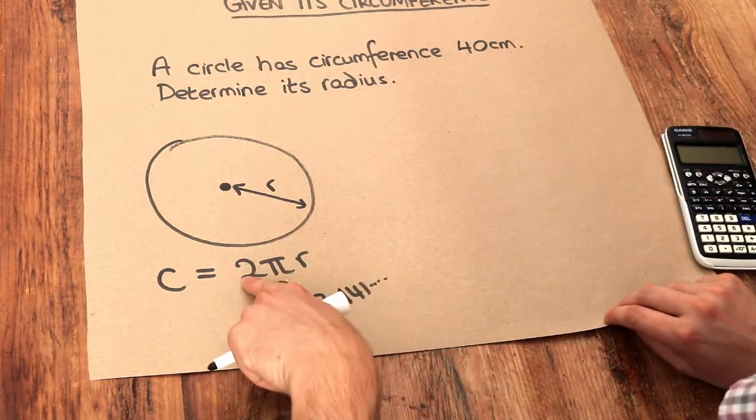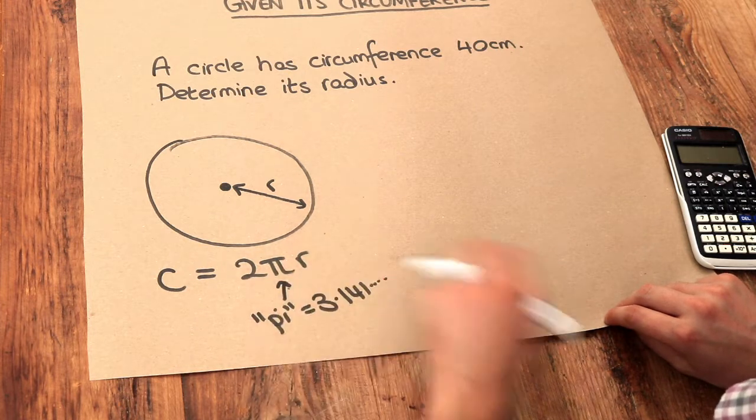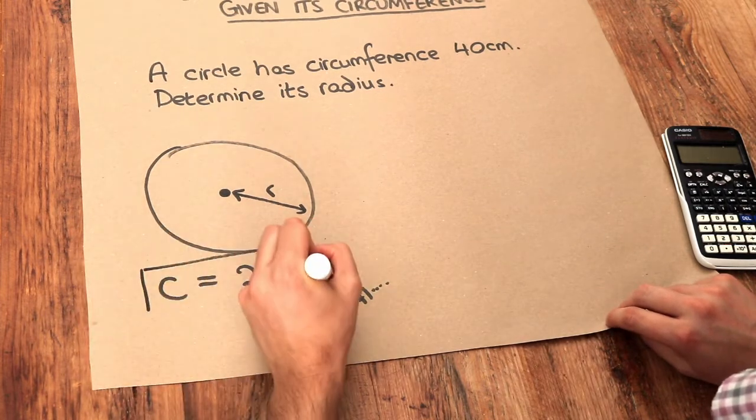And then it's multiplied by the radius. If they're next to each other in algebra, it means you multiply these things together. So that's the formula we need to use.